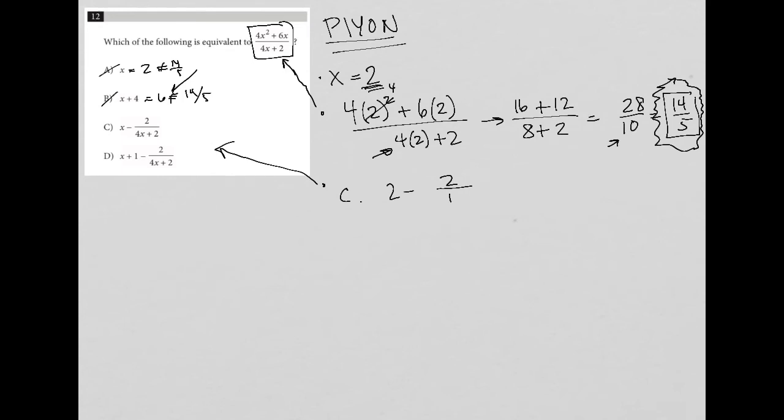So 2 minus 2 over 10. I'm going to treat this like a 2 over 1 minus 2 over 10. To get a common denominator, I'm going to multiply both top and bottom by 10. So I end up with 20 over 10 minus 2 over 10, which leads to 18 over 10.